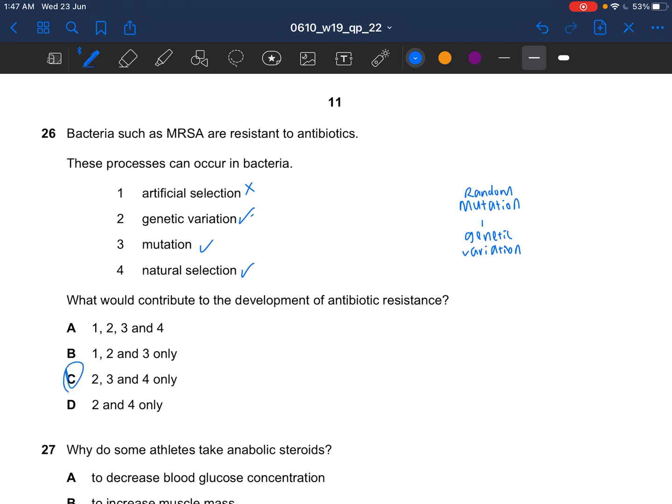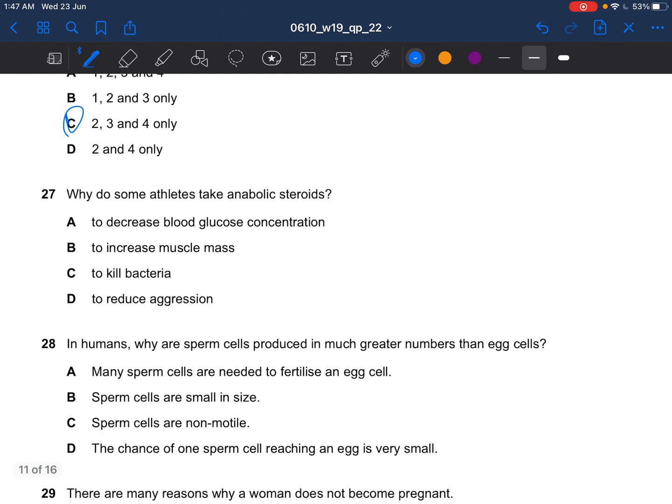Next question. Why do some athletes take anabolic steroids? They take anabolic steroids to stimulate muscle tissue. So the answer for question 27 would be B, to increase muscle mass.